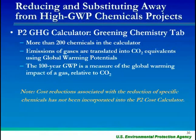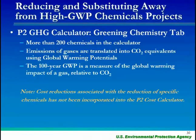We're moving now to reducing and substituting away from high global warming potential chemical projects. This is an exciting area with over 200 chemicals in the calculator now, upgraded based on the IPCC fifth assessment report. Emissions of gases are translated into CO2 equivalents using a global warming potential, and the 100-year global warming potential is a measure of the global warming impact of a gas relative to carbon dioxide.